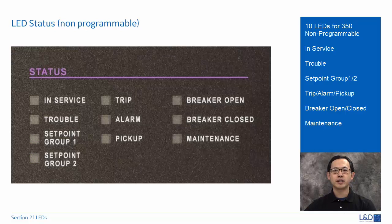Trip LED will turn on to red color when the relay detects a fault and sends a trip command to the trip output relay. The LED will reset by reset push button or the software when the fault condition has cleared.